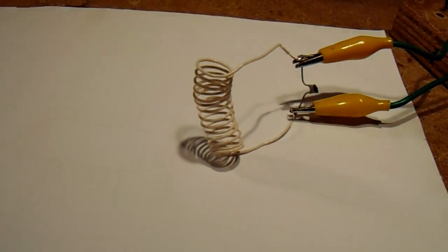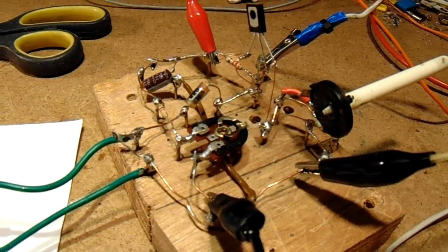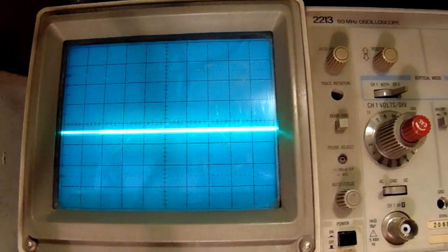And you will see, I click the crocodile clips. This is the coil now, connected to the oscillator, working on 12 volts approximately. No oscillation at all.